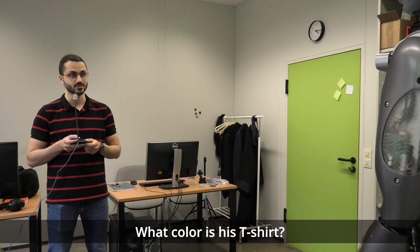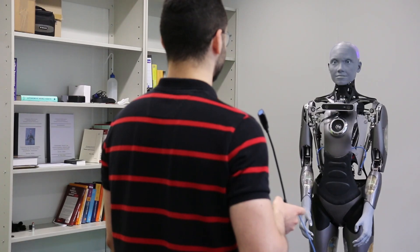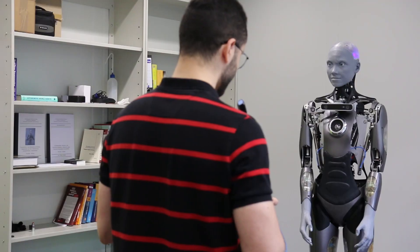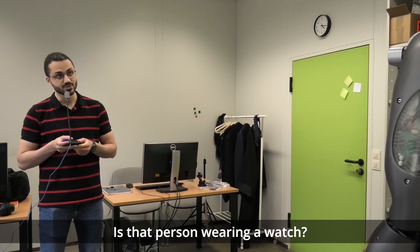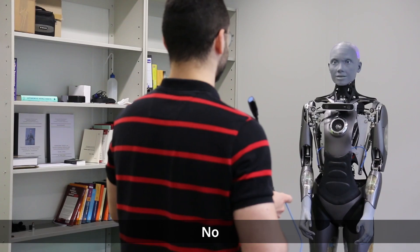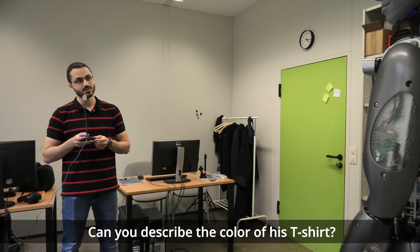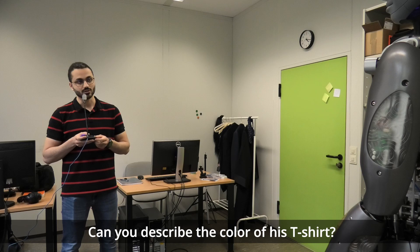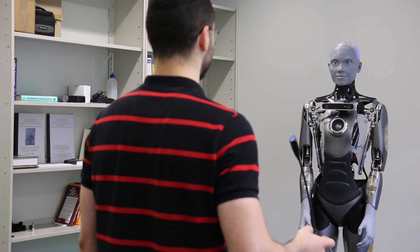What color is his t-shirt? Khaki. Is that person wearing a watch? No. Can you describe the color of his t-shirt? Black.